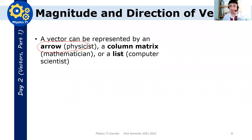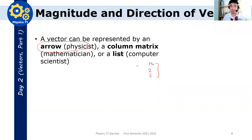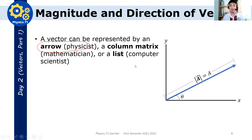A column matrix — for example, pag nakakarinig ka ng mga medyo mathematician, they will consider a vector as a column matrix, like one, two, three — that's a vector. We can also represent it as a list for a computer scientist. But for now, let's focus on the arrow notation for vectors. Note that all of these representations are equivalent — I can always convert an arrow notation to a column matrix or list notation. It really depends on the context.